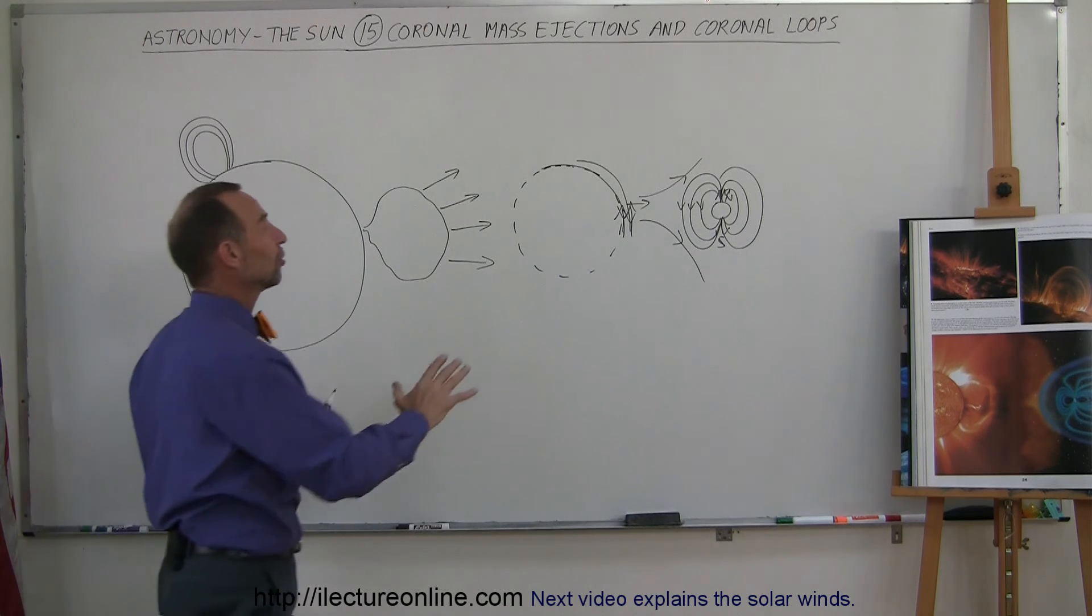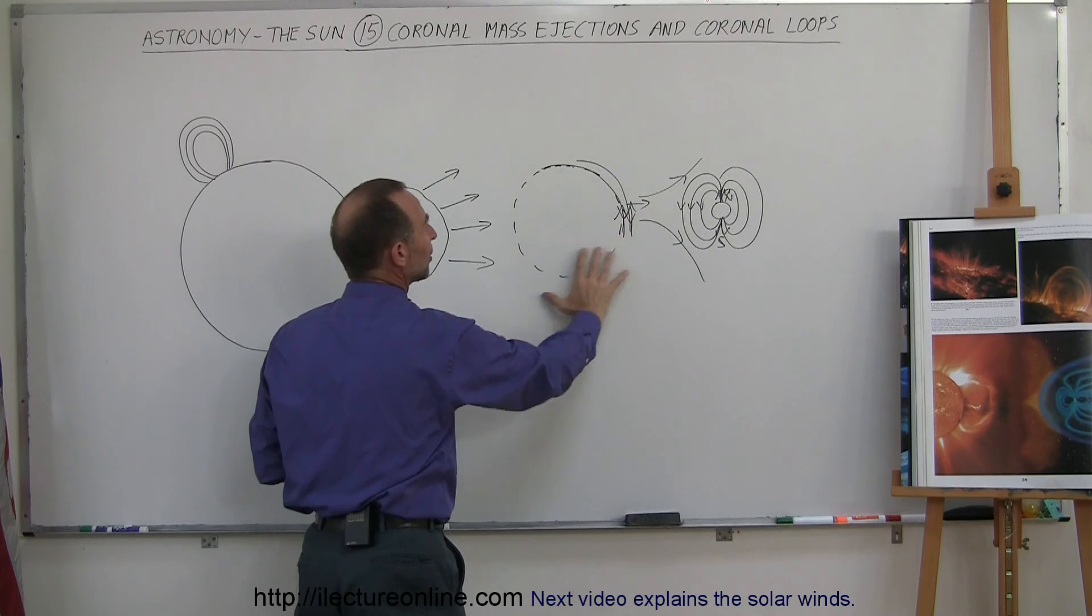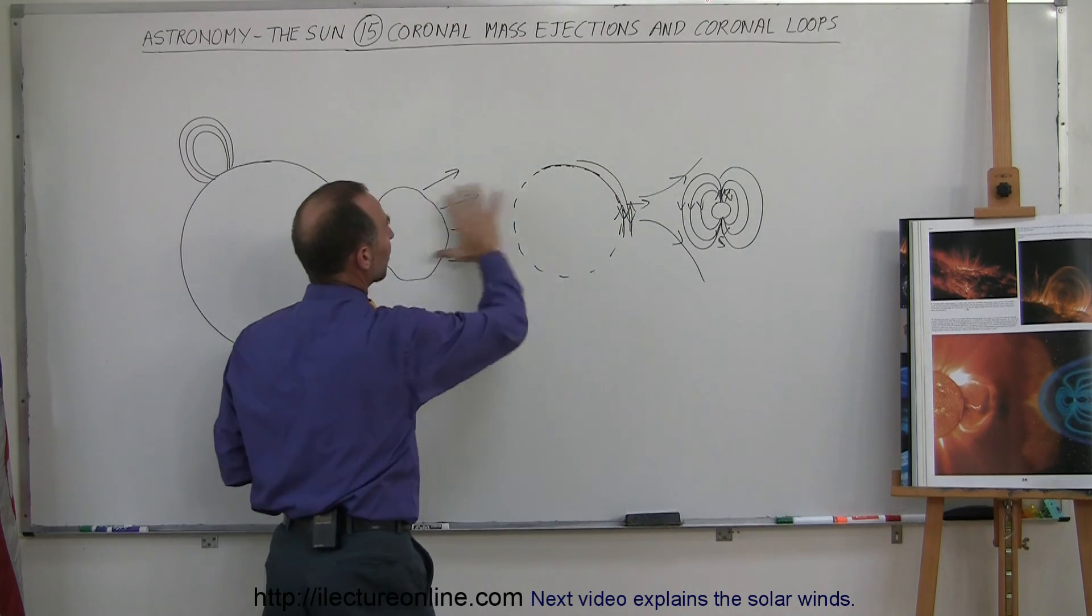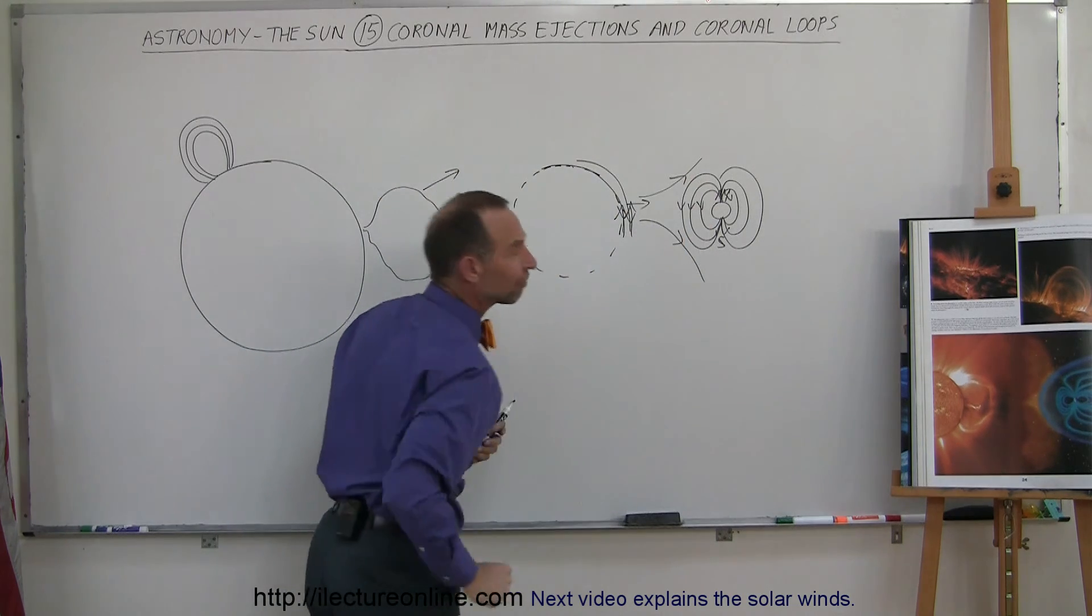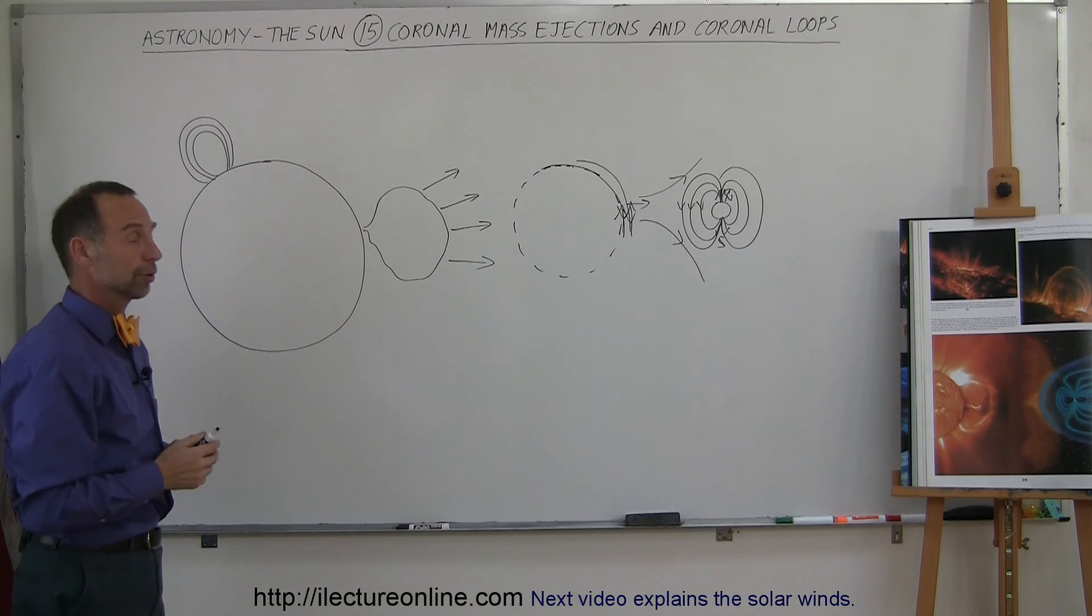So this is one of those cases where the interaction between the magnetic field caused by these coronal mass ejections will interact with the magnetic field of the Earth, and actually have quite an impact on the Earth.